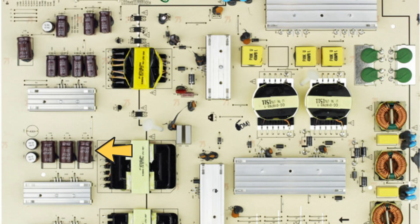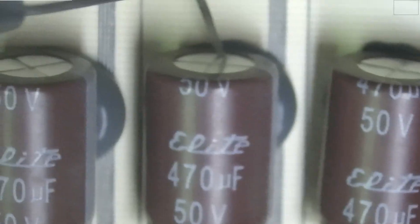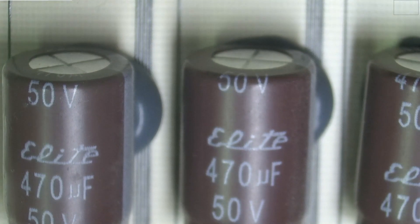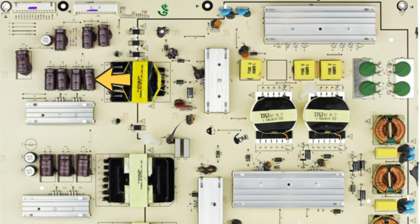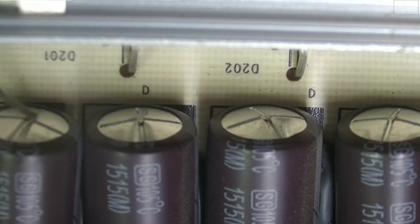First we're going to look at these three capacitors. As you can tell, the top of the capacitor is nice and flat, so that means these are good. But if we move on to these four capacitors, we can tell the top is rounded out—it's bulging.